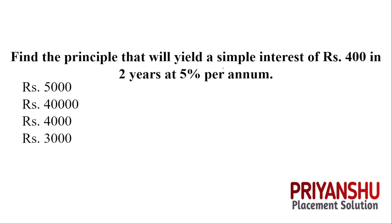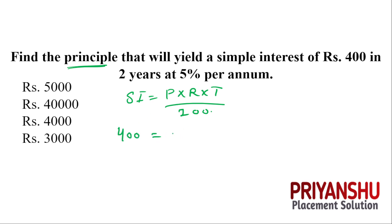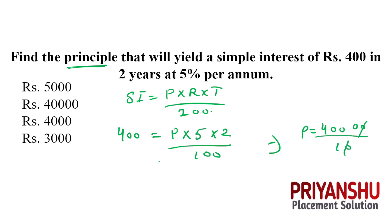The question is: find the principal that will yield simple interest of 400 in 2 years at 5% per annum. The formula is: Simple Interest = (Principal × Rate × Time) / 100. So 400 = (P × 5 × 2) / 100, which gives P = 40000 / 10 = 4000. The principal is 4000.